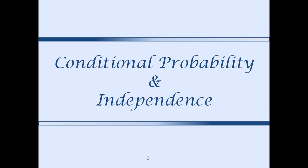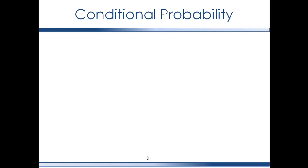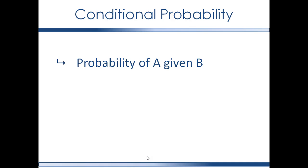What about the probability of an event given the occurrence of another event? What I mean to say is, given that we state some other event is guaranteed, if A and B are events in the event set, then the probability of A given B is written as follows.